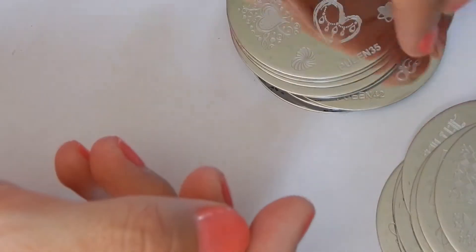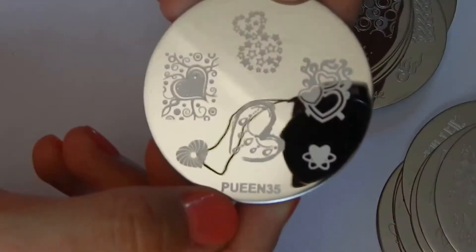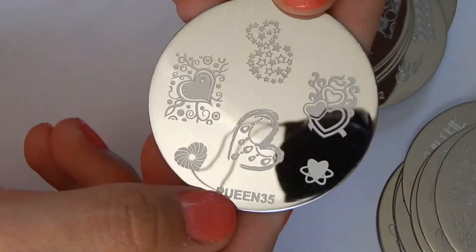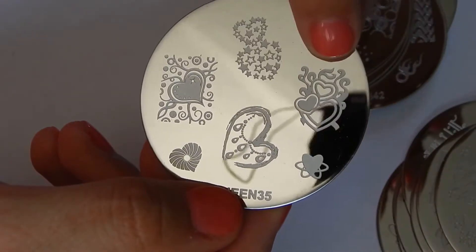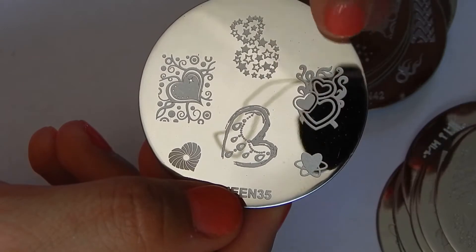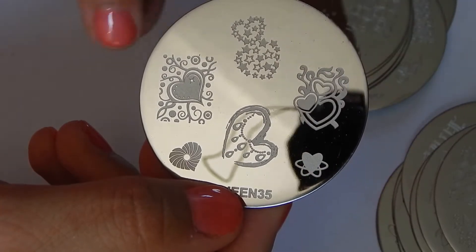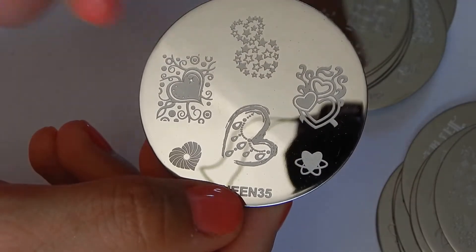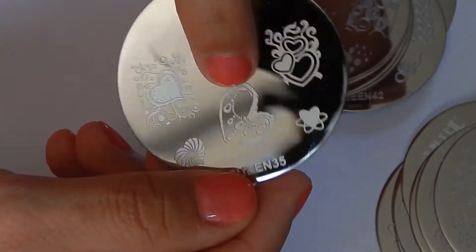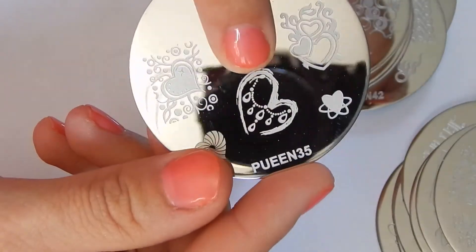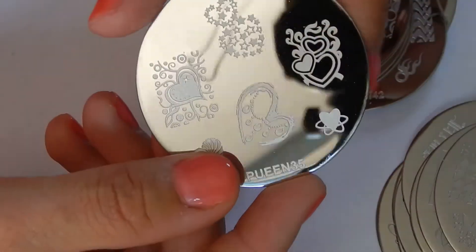I hope this is zooming in for you guys. Plate 35, some gorgeous hearts there. I like this whole heart design with squiggles and this one as well. This one has like a necklace look to it, I don't know if you guys can see that, it's very pretty.